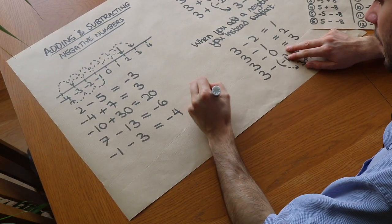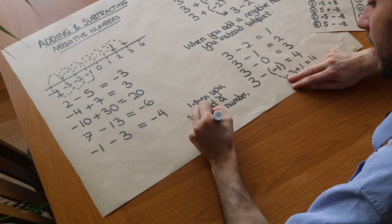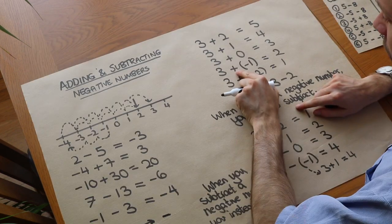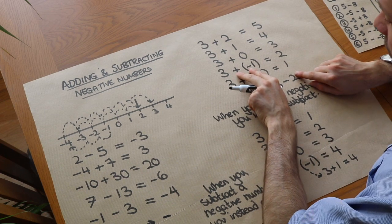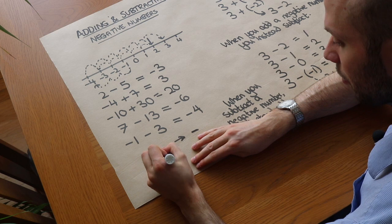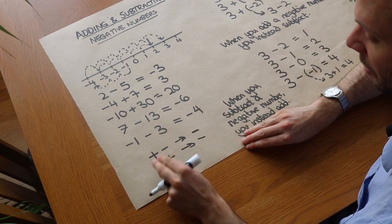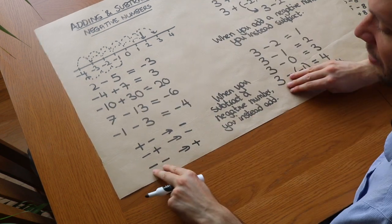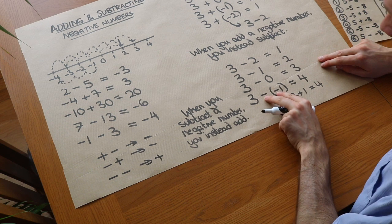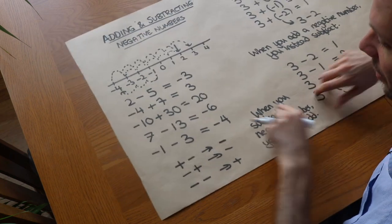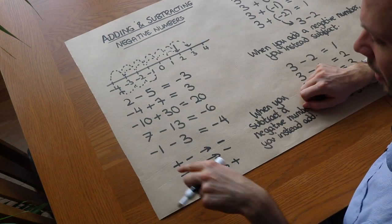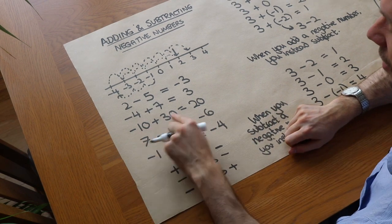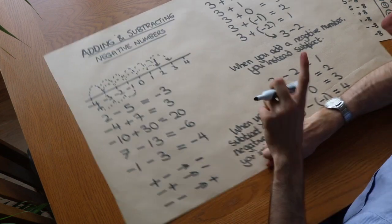When you subtract a negative number you instead add. One way of thinking about it: if you have a plus and a minus next to each other that effectively becomes a minus. So plus and minus next to each other can be replaced with a minus — it's three minus one. Similarly, if you had minus and plus next to each other it again becomes a minus. But if they're the same symbols — minus and minus — that becomes plus. Three minus negative one becomes three plus one. This only applies when the symbols occur together; if you've got minus ten plus thirty, you just think about starting at minus ten and going up thirty on the number line.